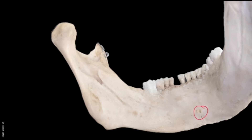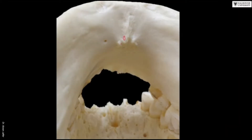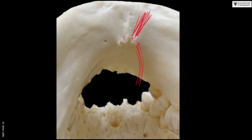In the midline there are the genial tubercles — superior and inferior genial tubercles. You can see there are actually four tubercles, two pairs. The inferior genial tubercles are for the geniohyoid muscle, which goes down, and the superior genial tubercles are for the genioglossus muscle, which goes up to the tongue.